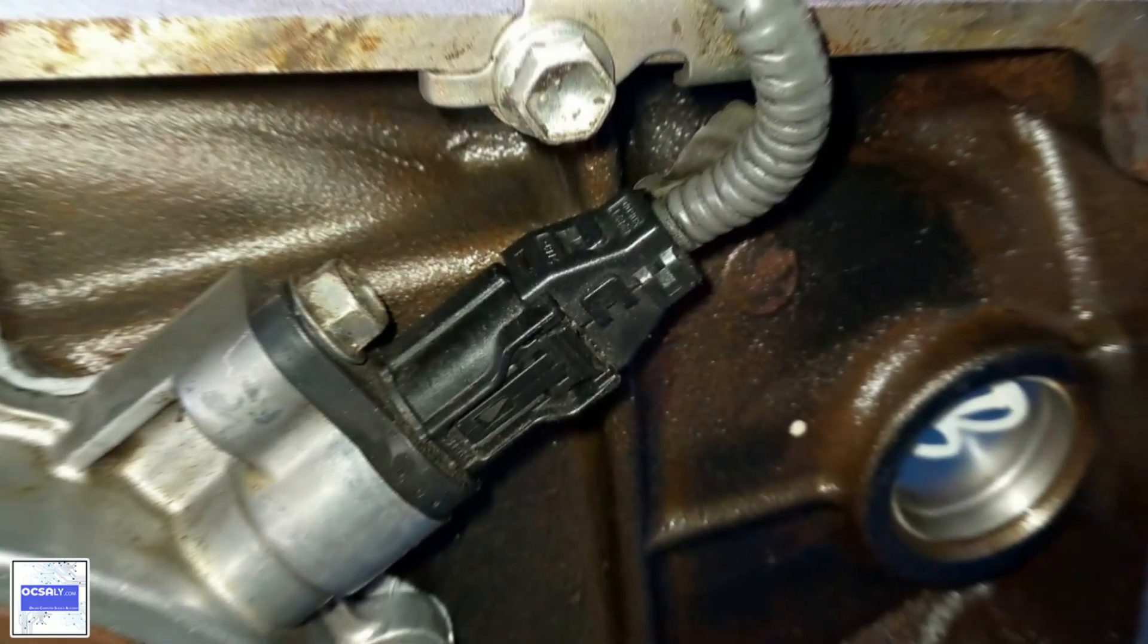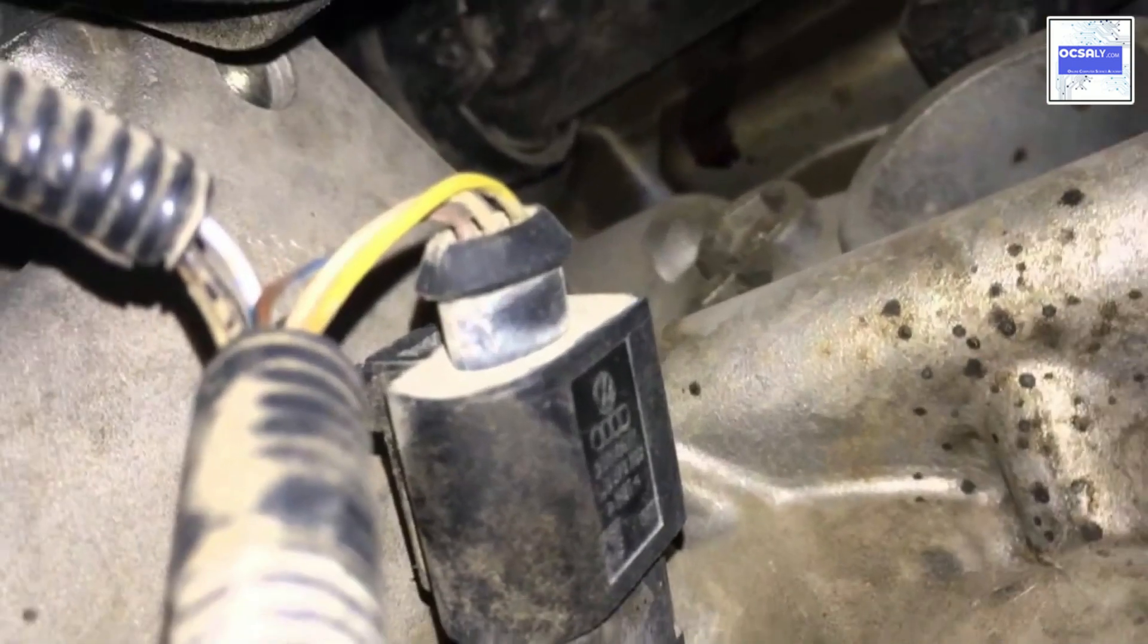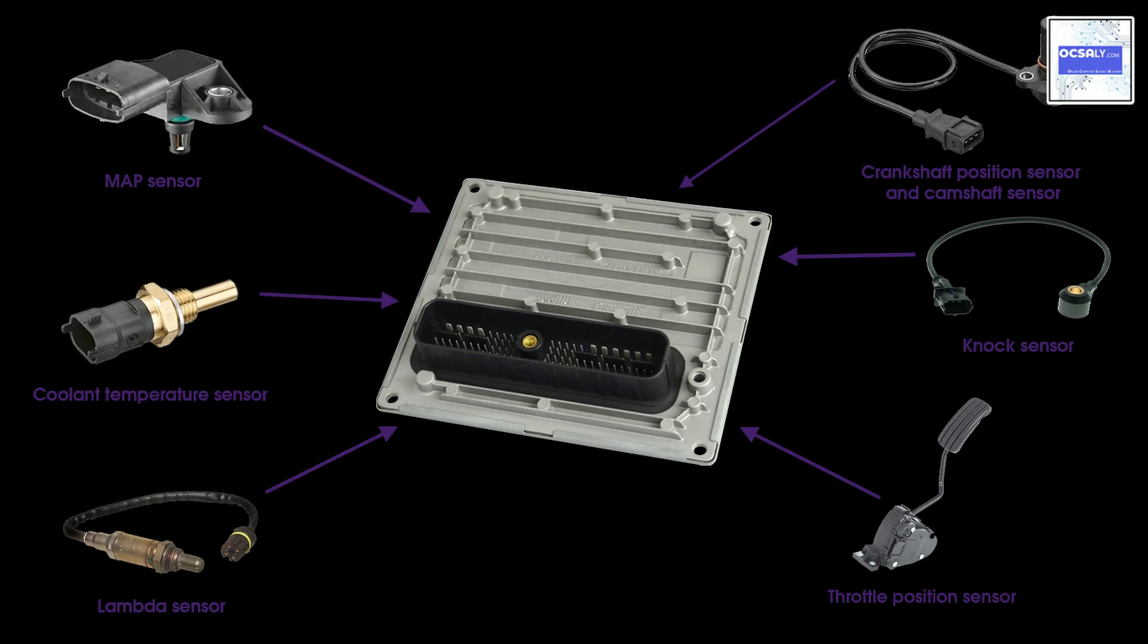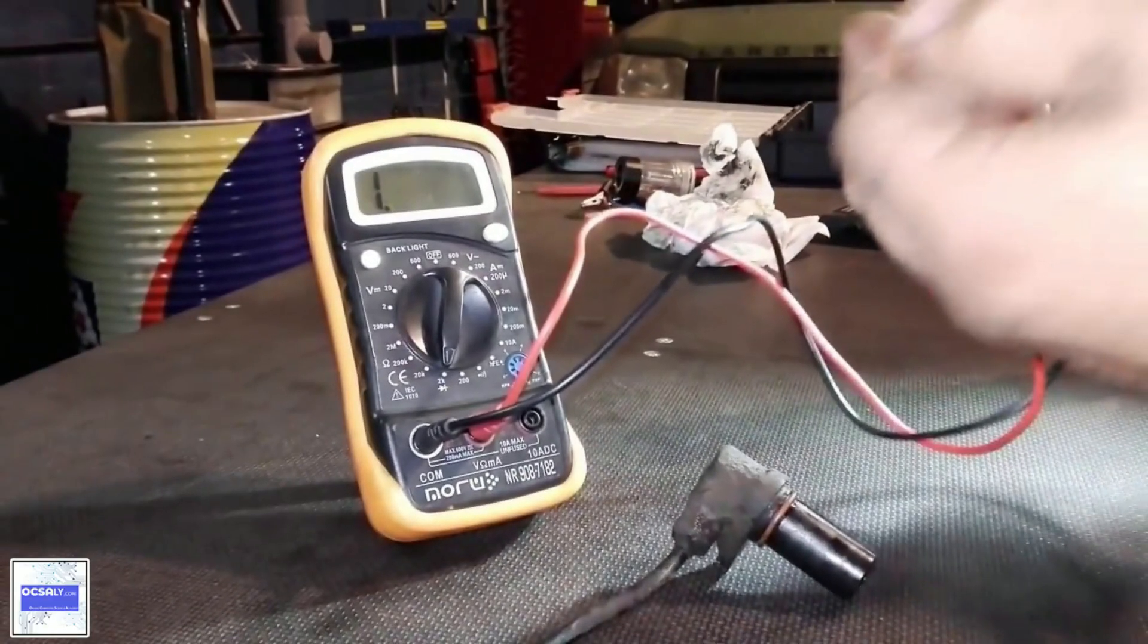If the signal from the sensor is missing, there will be no spark and fuel injectors won't operate. The two most common types are the magnetic sensor with a pick-up coil that produces AC voltage and the Hall effect sensors that produce a digital square wave signal, as in this photo.